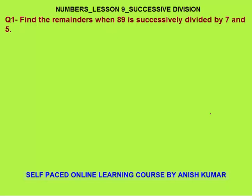Hello, this is numbers lesson 9. In this I will discuss successive division. I will start with a question to explain the concept: find the remainders when 89 is successively divided by 7 and 5. What it means is first we will divide 89 by 7.